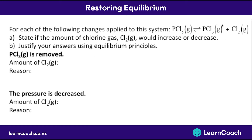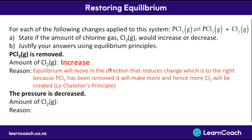If we remove PCl3 gas, which is a product, equilibrium is going to move in the direction to reduce that change — producing more product. So more PCl3 will be produced, and hence more Cl2 will be made in the process. The amount of Cl2 will increase, because equilibrium moves to the right to replace the removed PCl3.